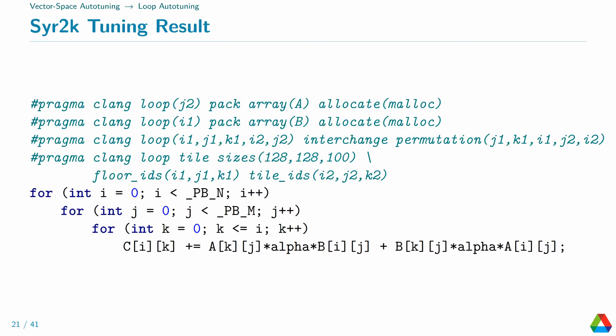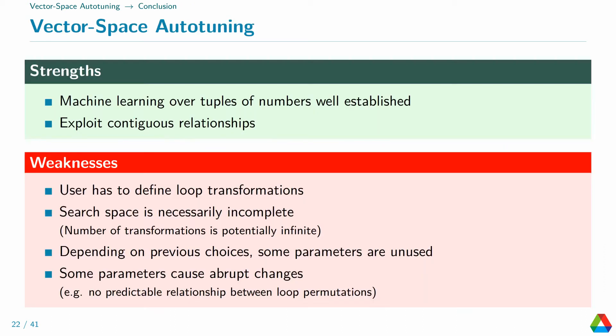This is the fastest configuration it found. I don't know a deeper meaning into why this is the fastest configuration. Just note that this is not DGEMM, but SUR2K, which has a non-rectangular loop nest. And how amazing I find that we can tile and interchange that with Polly.